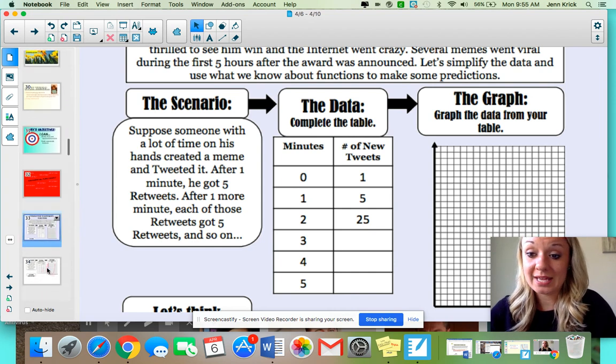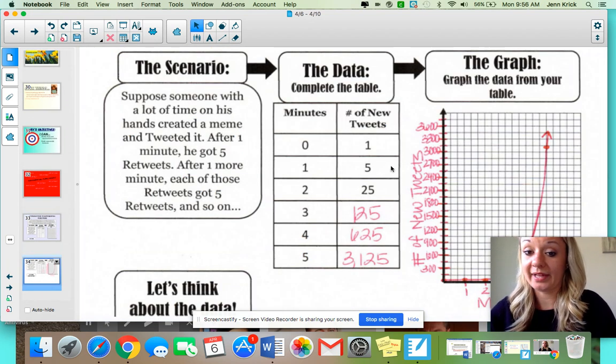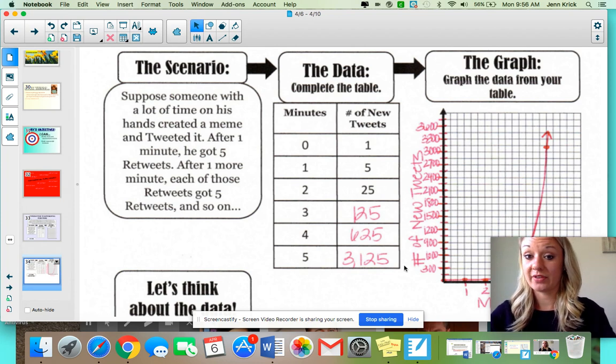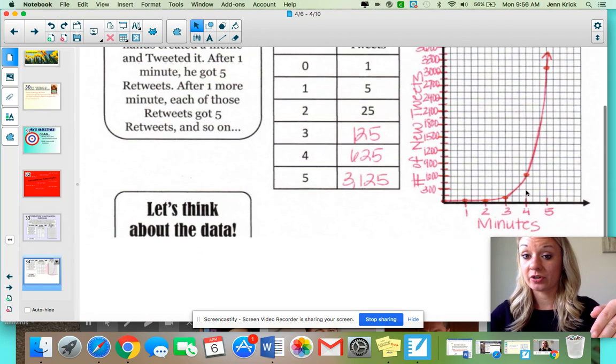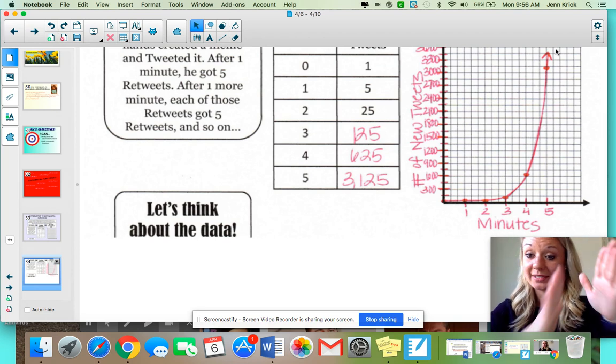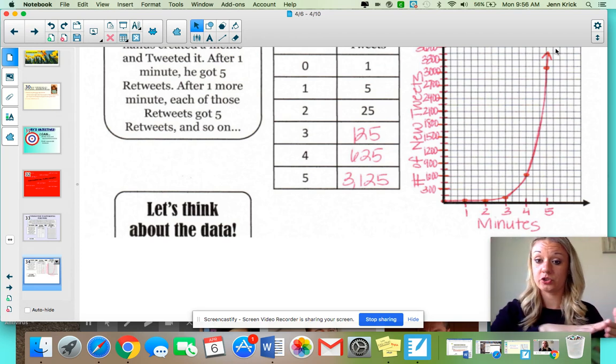This is the idea behind exponential data. It's like it starts small and it continues to multiply into something very big. And hopefully you can see even as your x values are only going up by one, your y values are being multiplied by a common factor. And that common factor in this case is five. So if we fill this in, it would look like this. Look after five minutes, 3,125 tweets that went out and your graph would look something like this. It's got that curve showing how it starts small and it increases at an exponential rate.